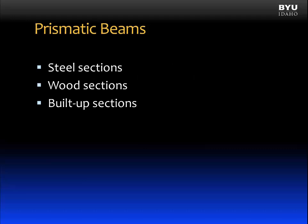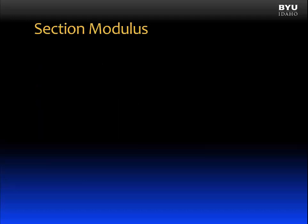We're going to consider three types of sections: steel sections, wood sections, and built-up sections. Before we do, let's discuss a new section property called the section modulus.